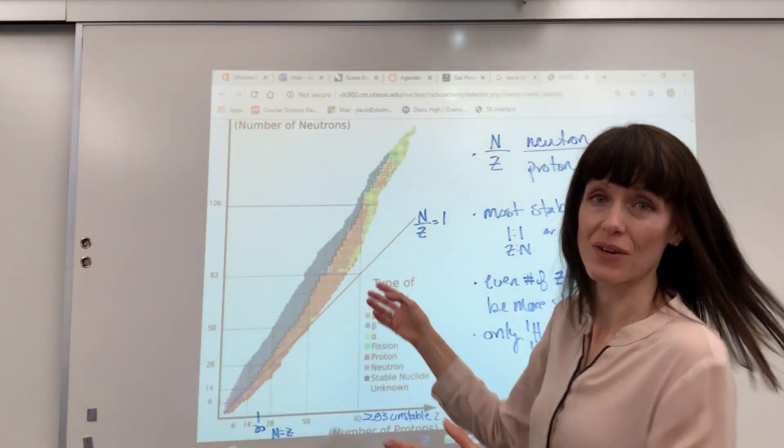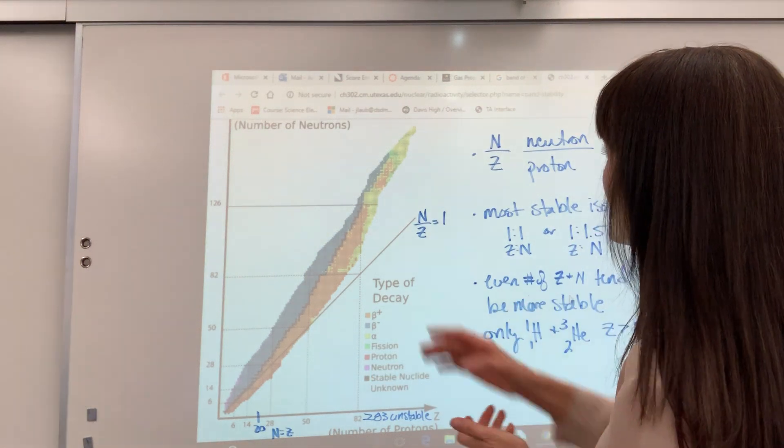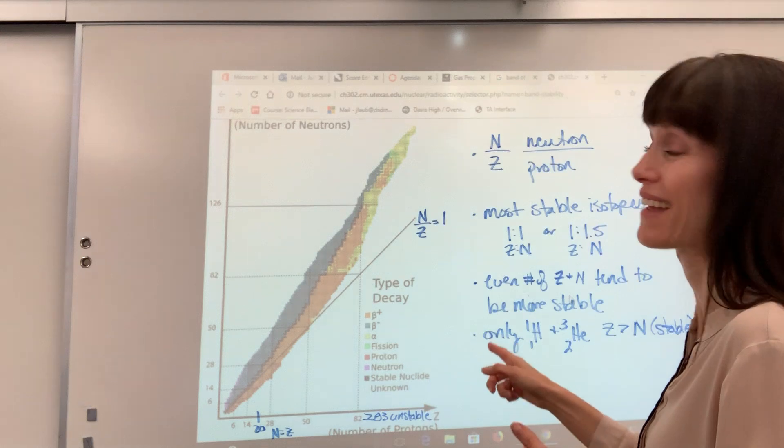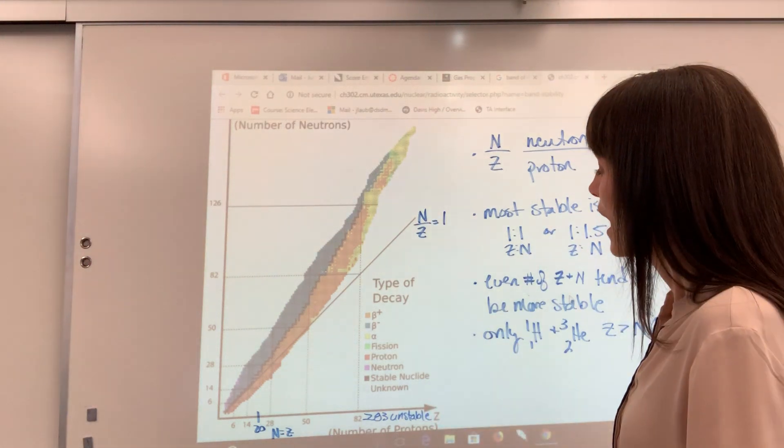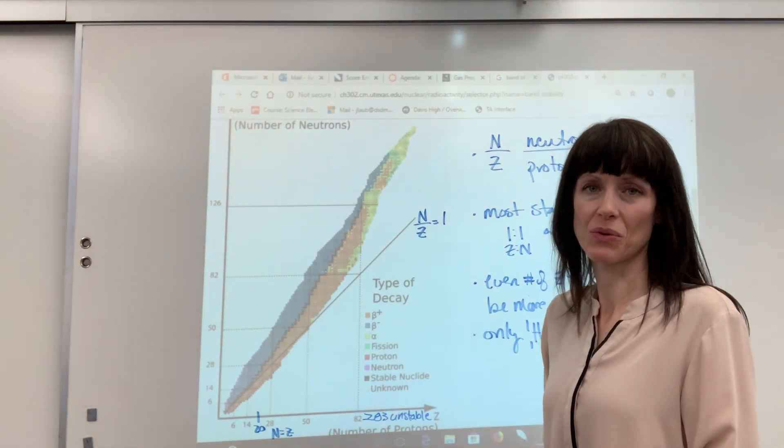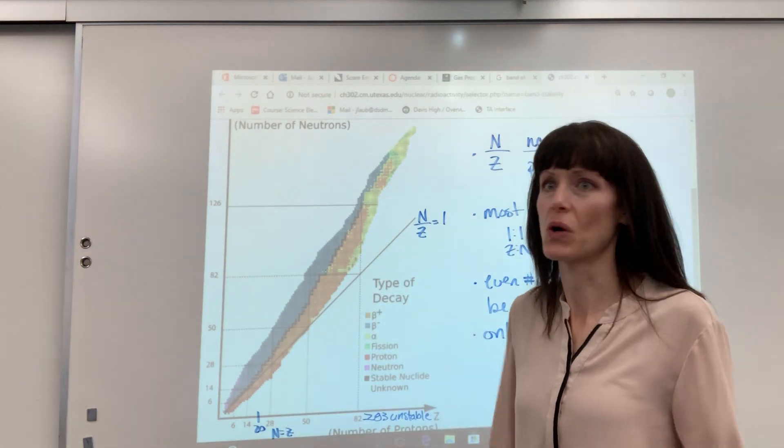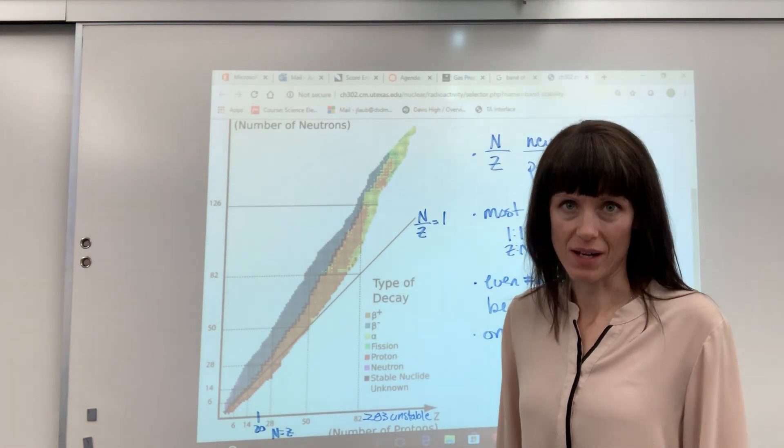Now this is a really cool diagram. Love this. And many thanks to our CH302, if you want to Google this. I really like this band of stability. It's the color coding that makes it so cool. It is showing every single isotope, every isotope that we have from all of our elements.